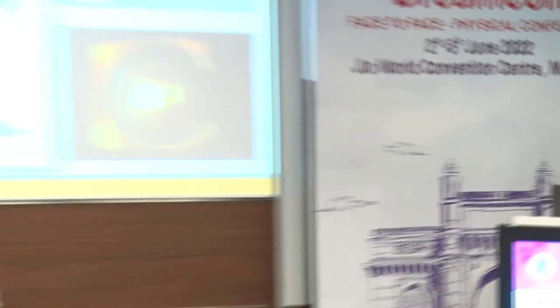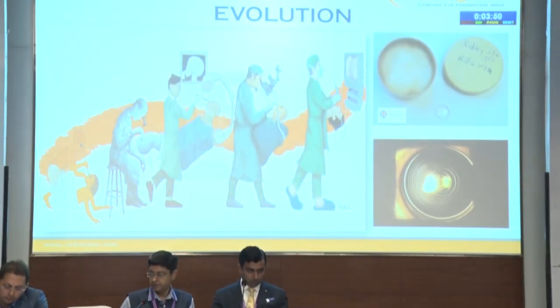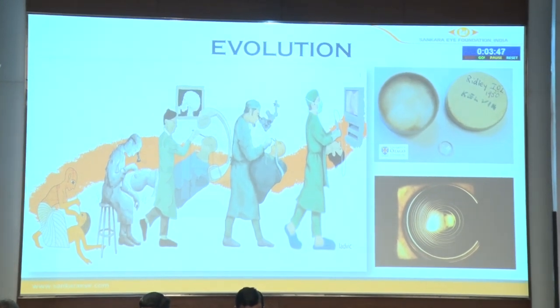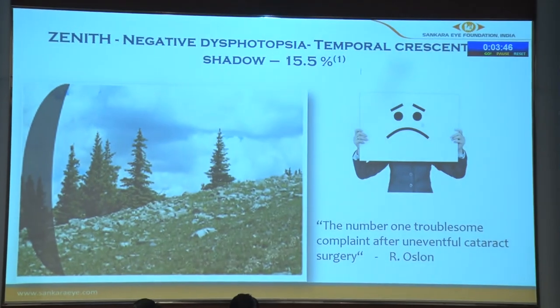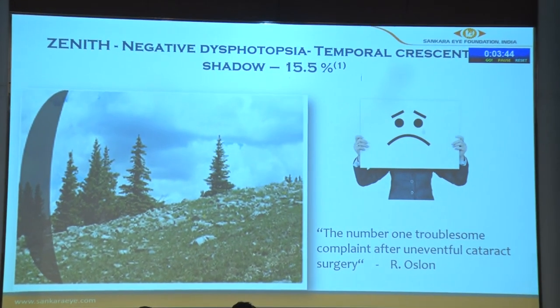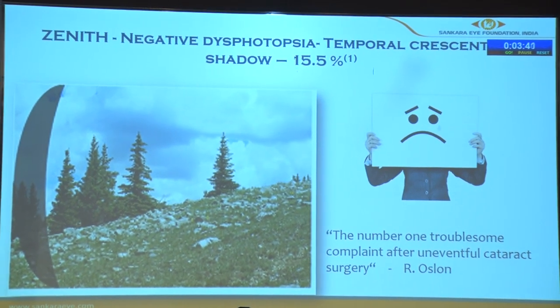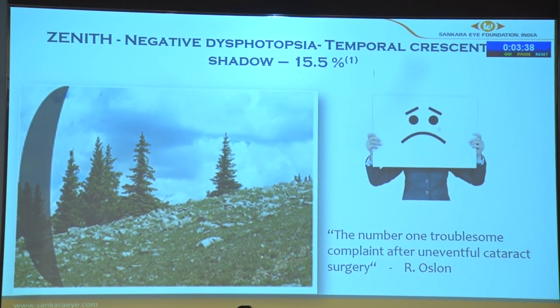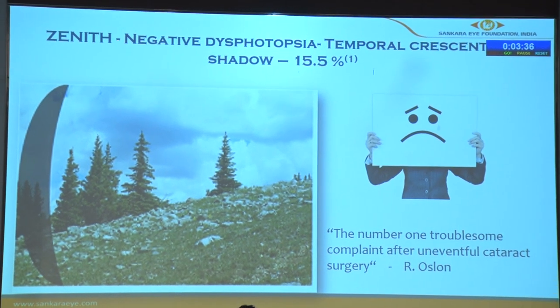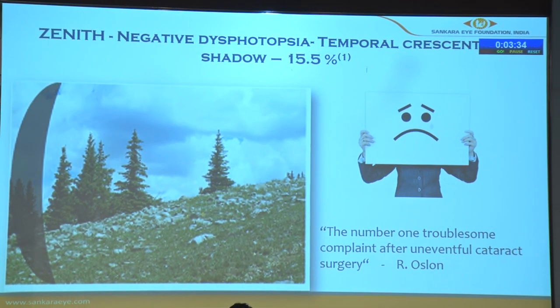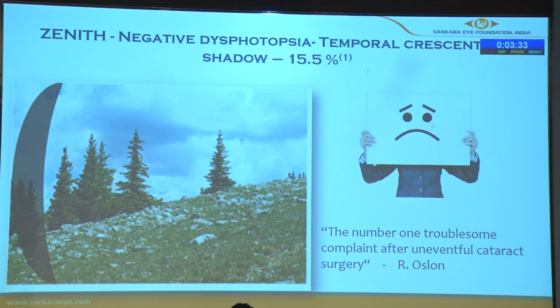It has been 2000 years since the first ever cataract surgery was done. Since then there has been a lot of evolution, where we now stand at trifocal lenses and high-end phacoemulsification. But there is one factor which prevents cataract surgery from reaching its zenith — negative dysphotopsia, perceived as a temporal crescent-shaped shadow. We do our best for patients, but the patient says there is this temporal crescent shadow which is bothering them a lot, and for which we don't have an answer.